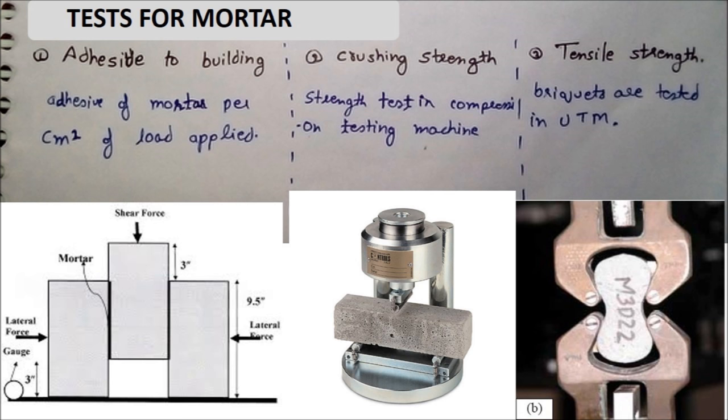The second test is the crushing test. In the crushing test, we apply a compressive load to the mortar until it breaks. We should also measure the tensile strength of the mortar — a briquette can be made and tested in a Universal Testing Machine (UTM).